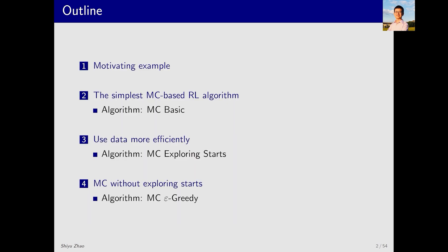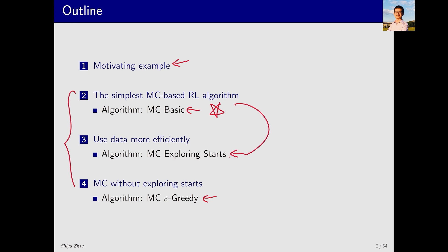This is the outline of this lecture. I'll first introduce the basic idea of Monte Carlo estimation through a motivating example. Then I'll discuss three Monte Carlo-based reinforcement learning algorithms: MC Basic, MC Exploring Starts, and MC Epsilon Greedy — where MC is the abbreviation for Monte Carlo. These algorithms are interconnected, with each serving as the basis for the next. MC Basic is the simplest algorithm and too simple to be practical, but it's crucial for understanding the core idea of learning without a model. It is then extended to the following two algorithms by improving efficiency and eliminating unrealistic assumptions.